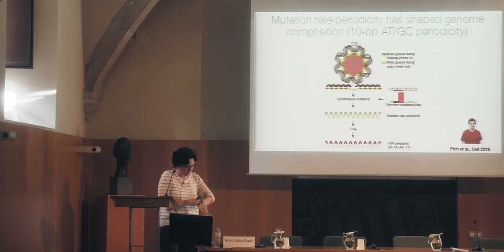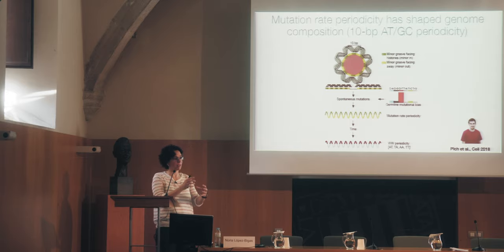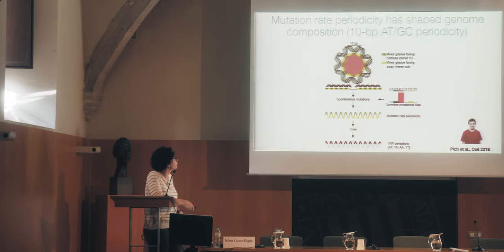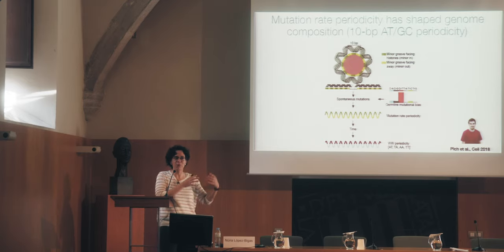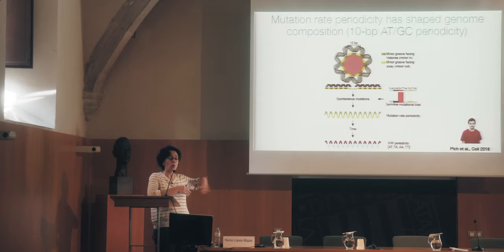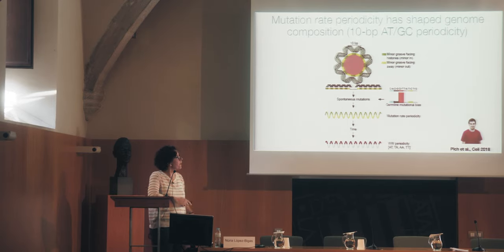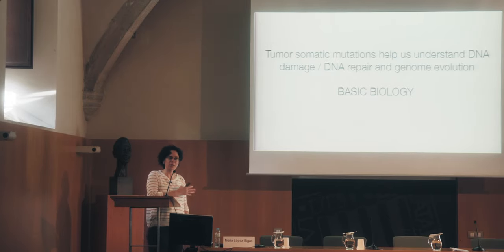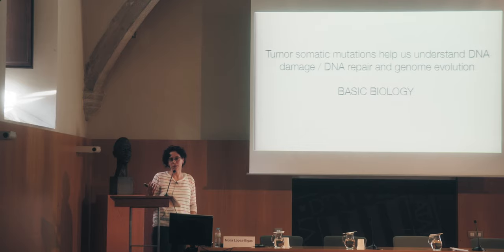There is a chicken and egg problem here: to create this WW periodicity we need nucleosomes, but to have nucleosomes there is evidence that sequence composition facilitates their positioning. We are not solving this chicken and egg problem, but we are saying that one way to create or reinforce this periodicity is by the simple fact that once nucleosomes are there, you have a periodic mutation rate. I think it's quite interesting — we start from somatic mutations in tumors and we can learn about DNA damage, DNA repair, and genome evolution. We can learn very basic biology from somatic mutations in tumors.